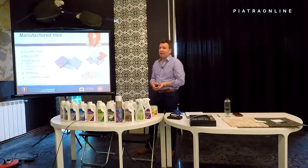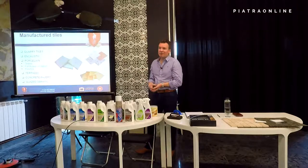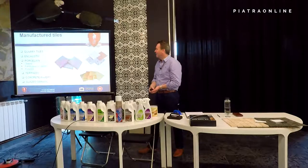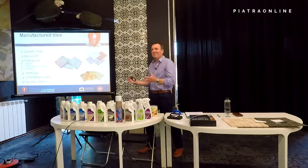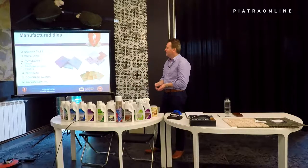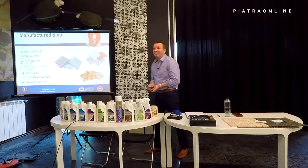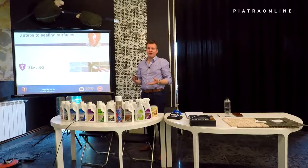Then we have things like terrazzo, which are generally resin-bound agglomerates — stone particles bound together with resin, squeezed into a huge block, cut into tiles, and finished. Then you have concrete pavers — things that aren't quite like natural stone but made to look like it, very very common. And then glazed ceramic, which is pretty much everywhere — everybody has glazed ceramic somewhere in their home.